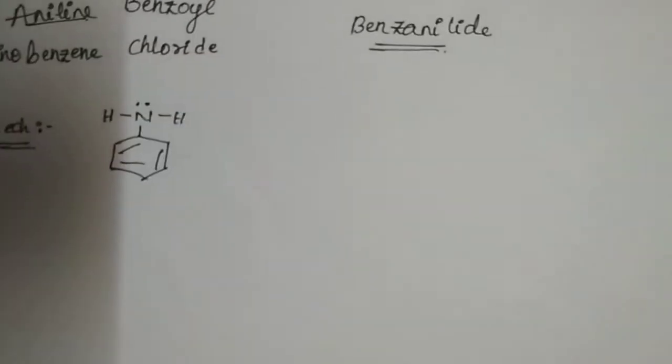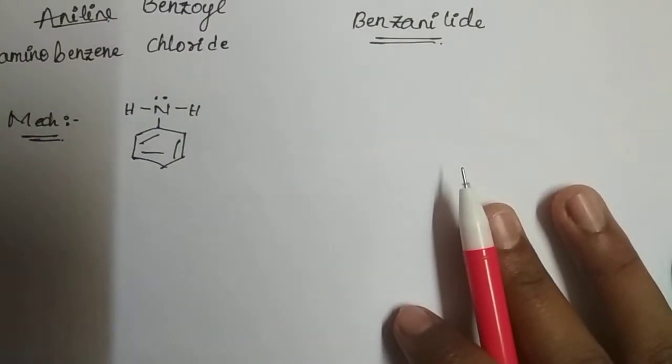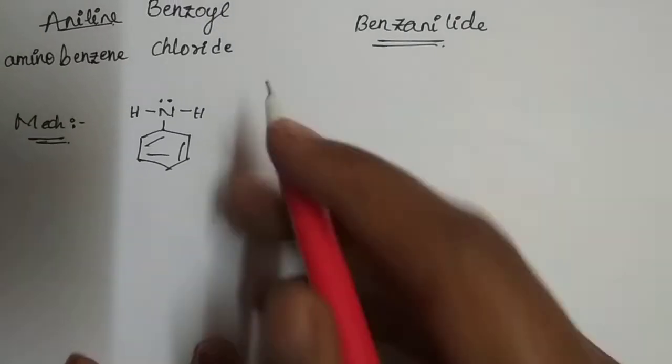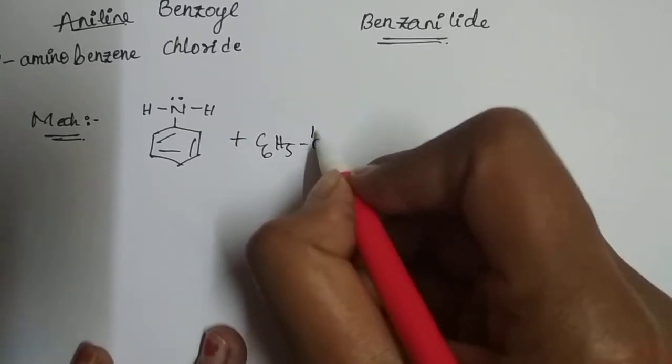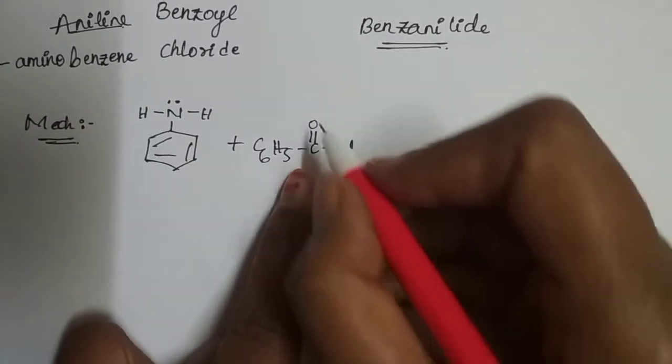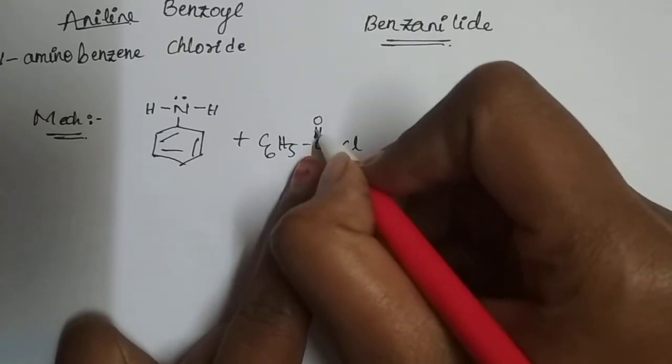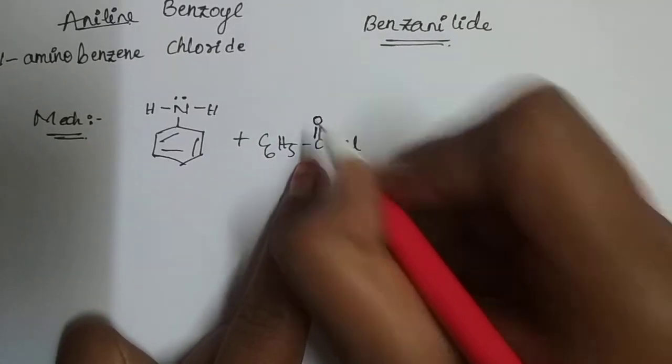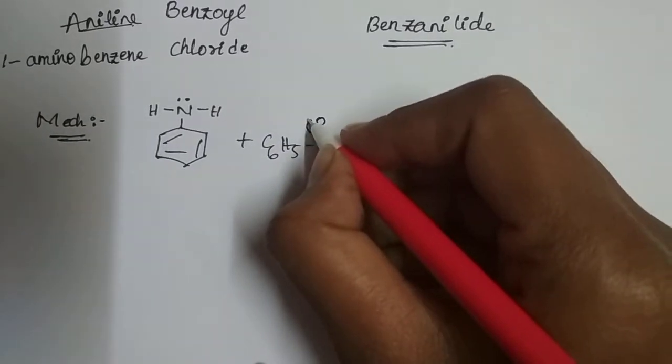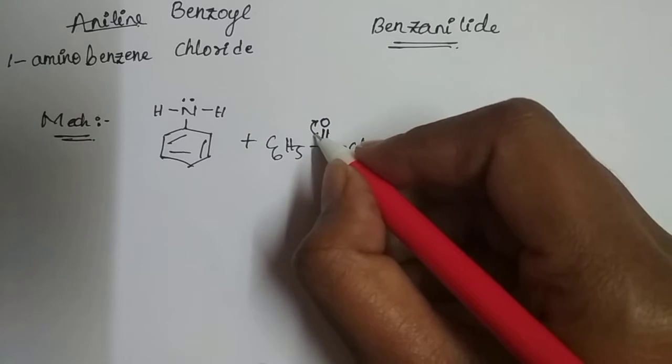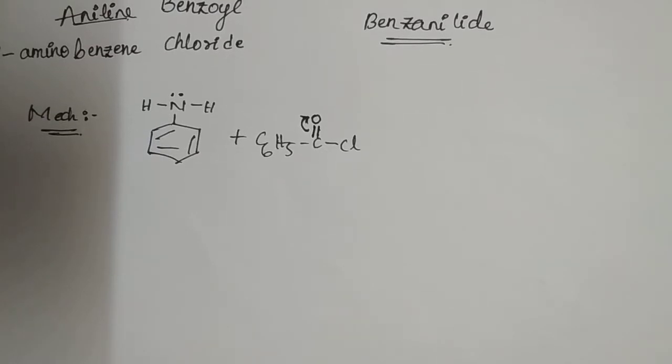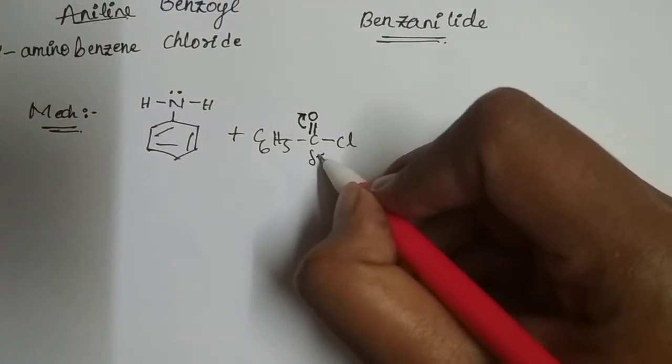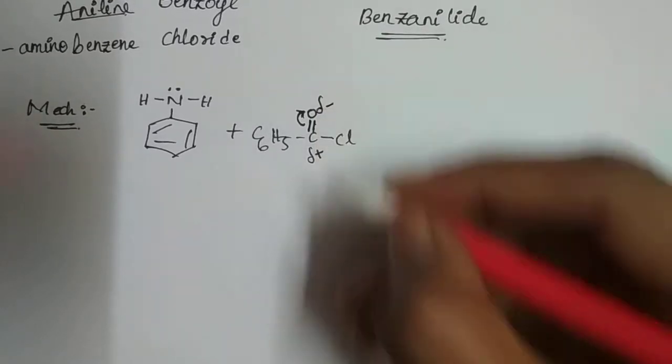Now it reacts with the benzoyl chloride C6H5-C double bond O-Cl. Now the polarity—the carbon adjacent to oxygen—of oxygen takes double bond electrons and itself gets resonance, and the carbon attains partial positive charge and oxygen attains partial negative charge.